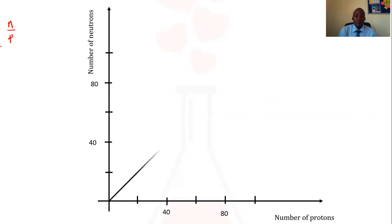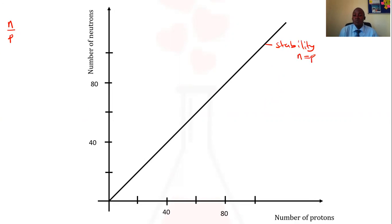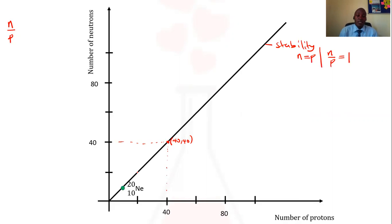Let's have a look at this line here. This line shows the stability line, and in this stability line, the number of neutrons equals the number of protons — that is to say, the neutron-to-proton ratio equals one. For example, neon has 10 protons and its mass number is 20, so the number of neutrons is 20 minus 10, which is 10. So neon has 10 neutrons and 10 protons, and the neutron-to-proton ratio is 10 over 10, which gives us 1.0.